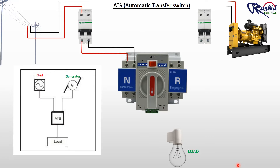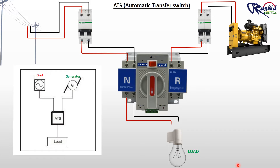Then we take generator power supply to emergency terminal of ATS through MCB. Now from the outgoing terminal of normal power supply we make connection to the load. Same way we connect emergency terminal to the load.